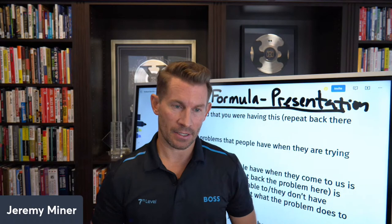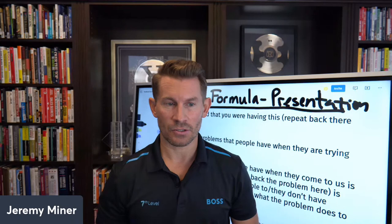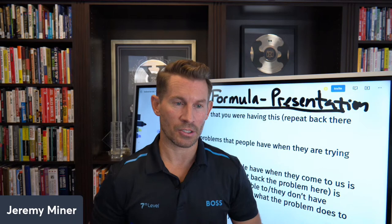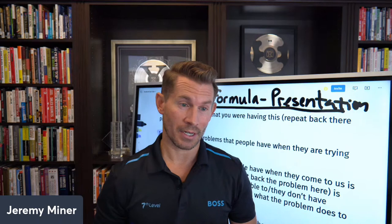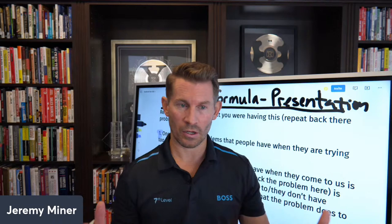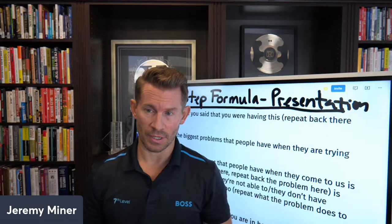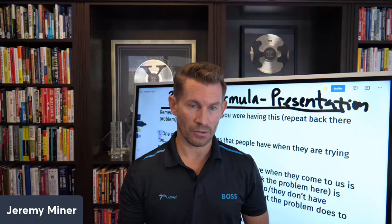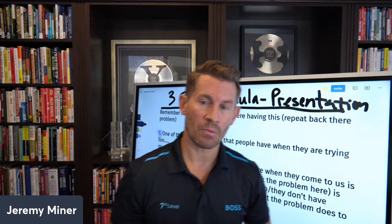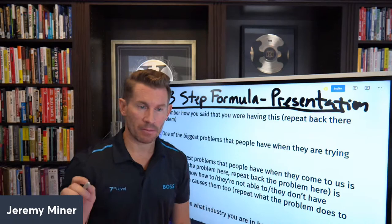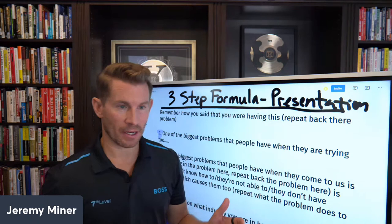So — three-step formula. Typically in any presentation, we train 158 industries including yours. We have written sales structures for pretty much every industry. Whether it's B2C or B2B, it doesn't matter. We want to have three to four pillars of problems that the prospect has told us about during the discovery part of the call — whether it's a one-call close, two-call close, or a three-to-six-month B2B sales cycle. The first thing we want to do is repeat back their biggest problem first and foremost.